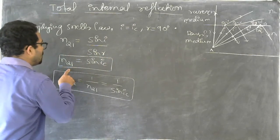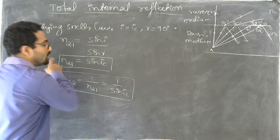See here n2 by n1, so n1 sin i is equal to n2 sin r.